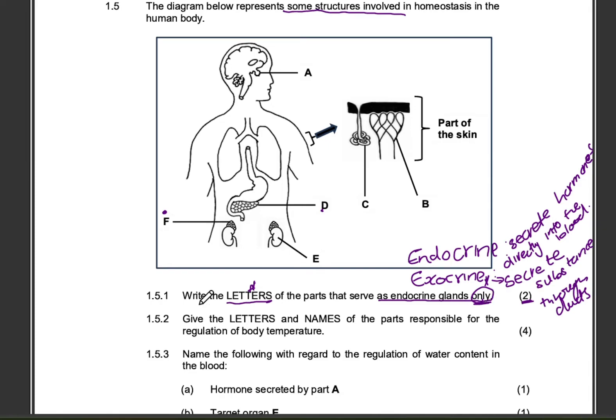The correct letters here will be A and F. A, that's the pituitary gland. We know that the pituitary gland secretes a number of hormones. It secretes a lot of hormones: FSH, LH, GH, ADH, prolactin, all secreted by the pituitary gland.